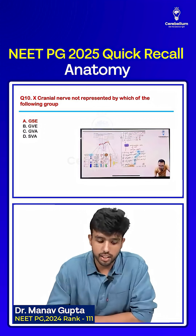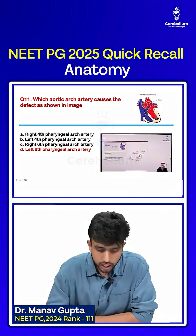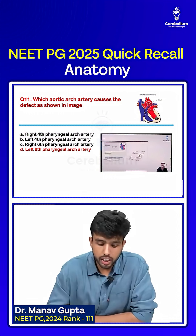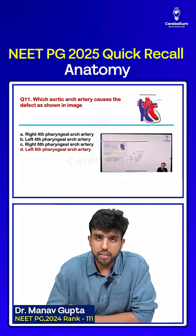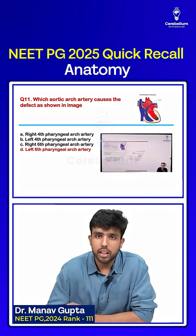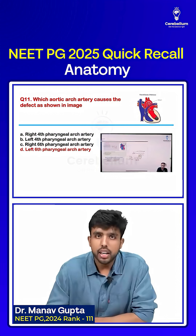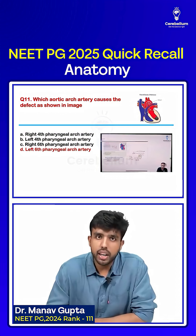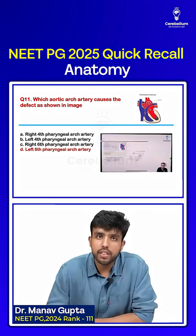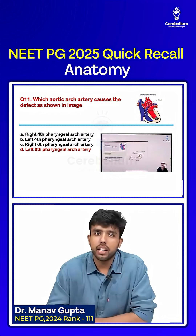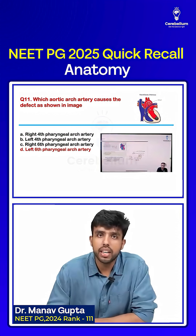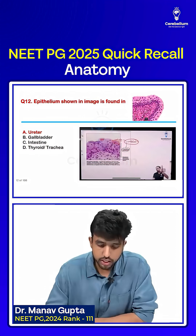The next question: which aortic artery causes the defect as shown in the image? Options: right fourth pharyngeal artery, left fourth pharyngeal artery, right sixth pharyngeal artery, or left sixth pharyngeal artery. The correct answer is option D, left sixth pharyngeal artery.